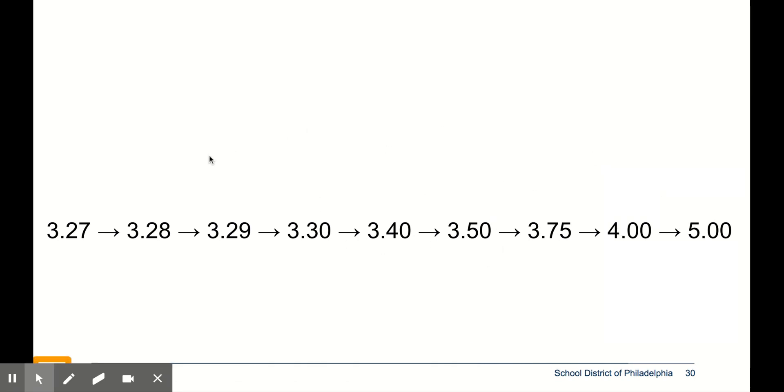So imagine we have some money. Starting at $3.27, I'm going to add one penny. It will get me to $3.28. Another penny gets me to $3.29 and another penny gets me to $3.30.